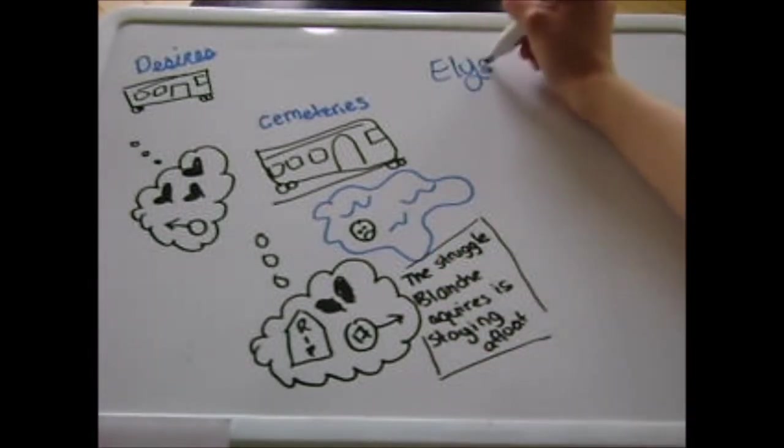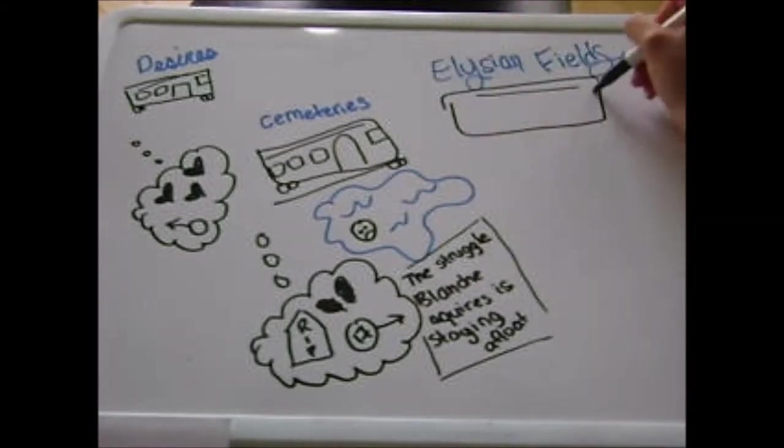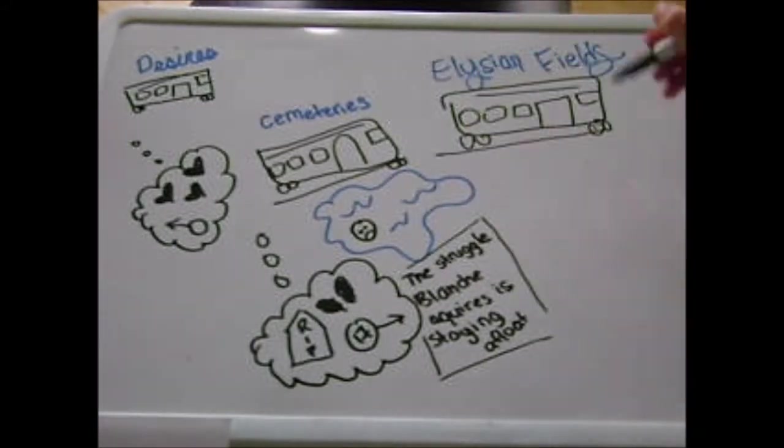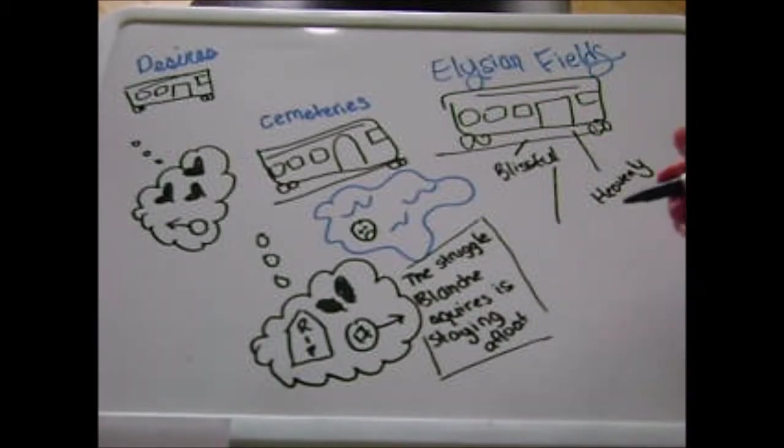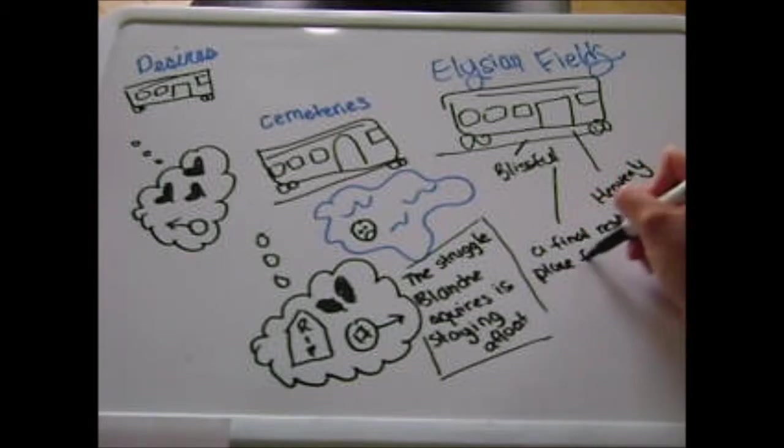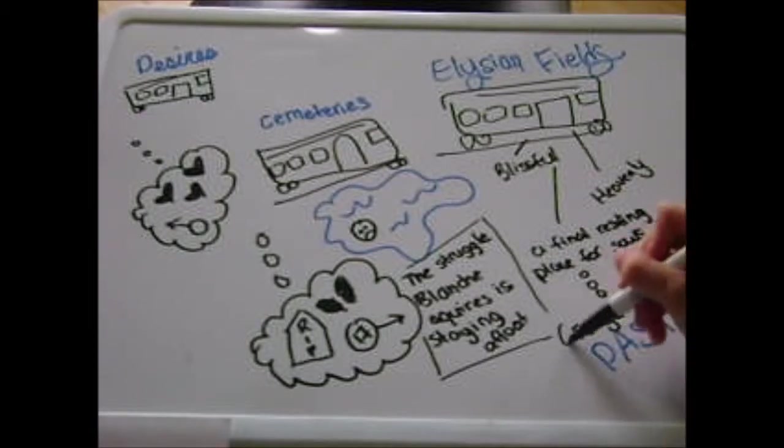The last streetcar in Blanche's journey is Elysian Fields. An exact definition of Elysian is blissful, heavenly, or a final resting place for souls. This is significant for Blanche's desire to move on from her past life of loss. Blanche enters Elysian Fields in hopes of moving on and starting fresh. While in Elysian Fields, she hopes to find a husband that is blind to the true Blanche and is kept in the dark.